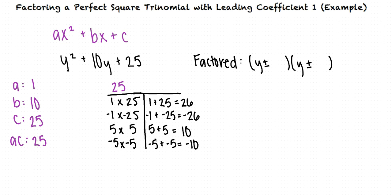We can see that 5 and 5 add to 10. So these will be the numbers we put into our factored form of the original polynomial. Like in the first example, our two factors y + 5 and y + 5 are the same quantity, so we can write this as (y + 5)².